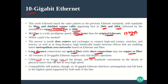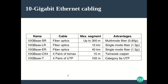Compatibility still matters. Through auto-negotiation, the 10 Gigabit Ethernet interfaces auto-negotiate and fall back to the highest speed supported by both ends. Regarding encoding techniques: 4B/5B was used in fast Ethernet, 8B/10B in gigabit Ethernet, and now 64B/66B encoding is used in 10 Gigabit Ethernet.